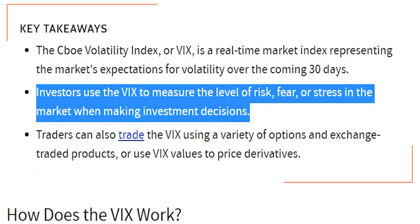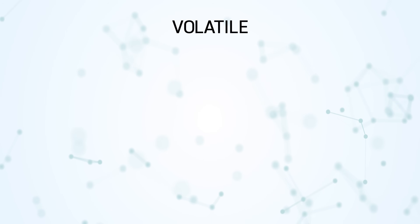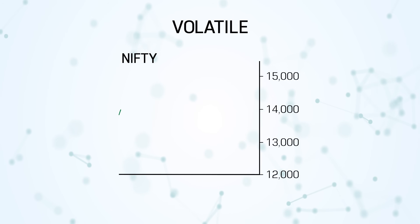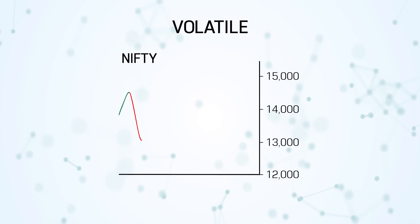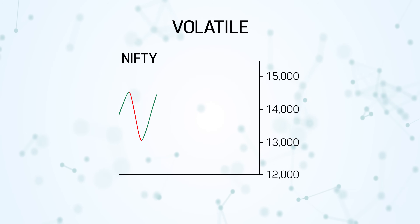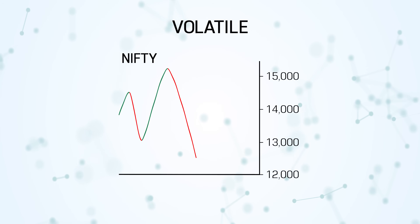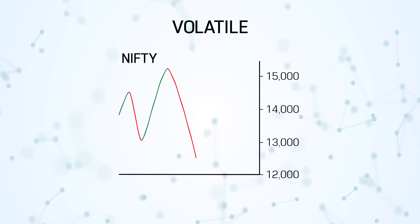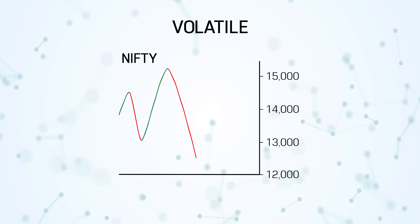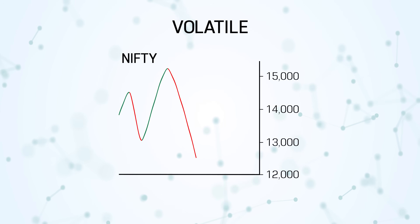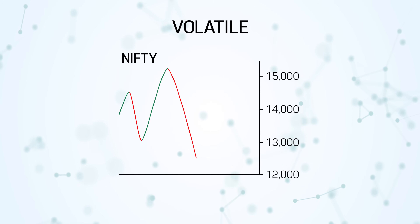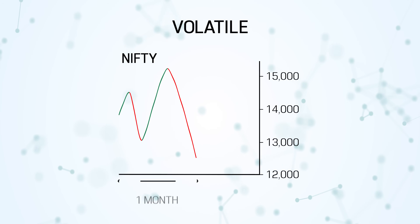So what is volatile? Volatile means not moving in a single direction — it goes up and comes down very fast. That is called volatile, not a stable one. The volatility index indicates the expected percentage of price movement over a period of one month.